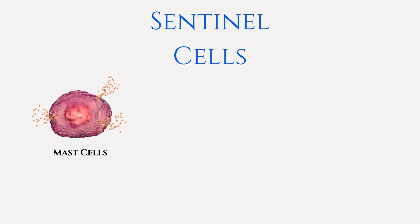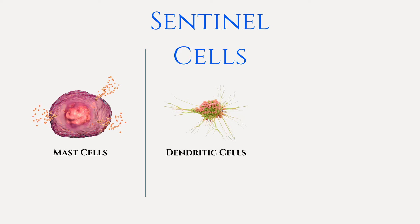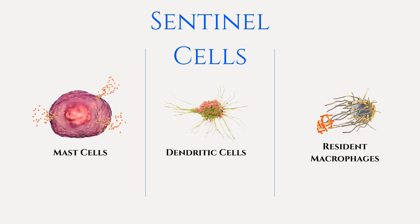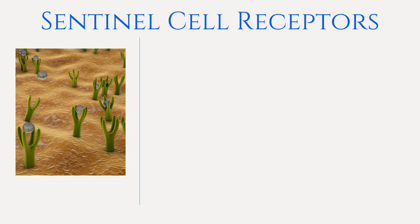Before getting into the specific inflammatory mediators, I'm going to talk a bit about sentinel cells. Sentinel cells refer to immune cells which can recognize pathogens or damaged cells. They are associated with certain antigen-presenting cells, also known as APCs, which help make antigens recognizable to the T cells involved in adaptive immunity. APCs include mast cells, dendritic cells such as the Langerhans cell, and resident macrophages such as alveolar macrophages found in the lungs and Kupffer cells of the liver. Sentinel cells are equipped with specialized receptors, sometimes referred to as pattern recognition receptors, abbreviated PRRs.